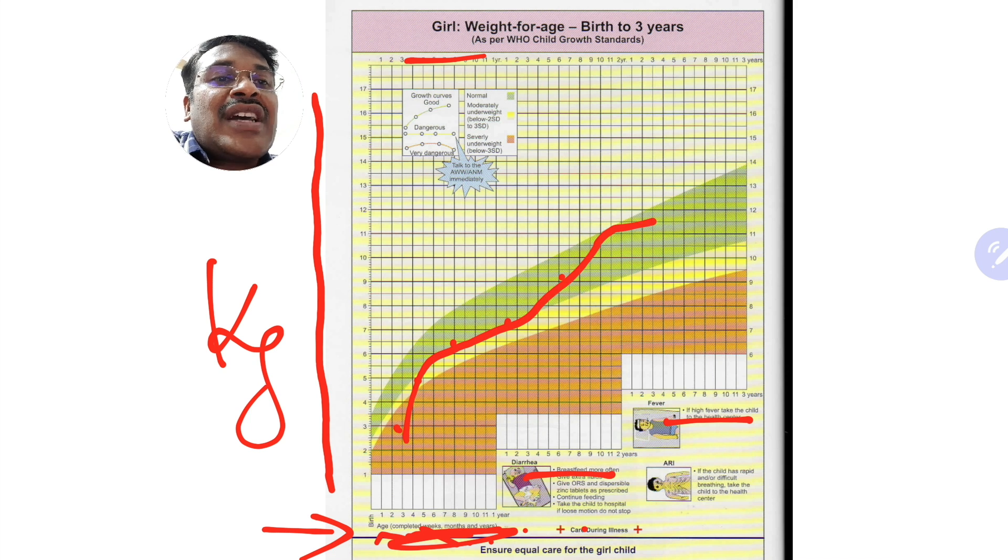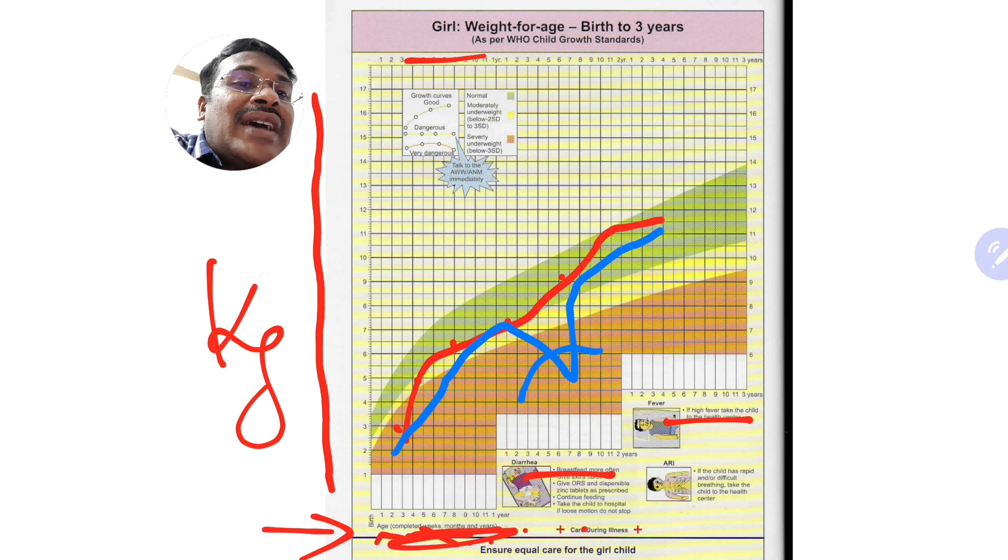Suppose the growth curve goes like this then nothing to worry, but suppose this same growth curve it follows a different pattern. For example, the child's growth is like this and then suddenly we see a dip here and then again the child grows like this. Then we can see the child has suffered from some severe illness during this time that is corresponding to seven to one year and seven months. There was some major illness or some major problem for the child because of that we had a dip in the weight of the child.